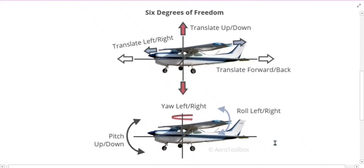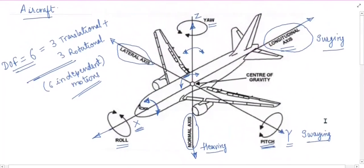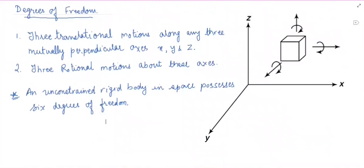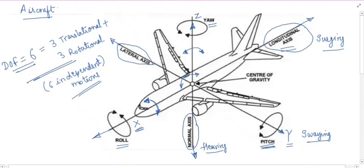These are the six independent motions that an aircraft or any free body in space can have. This is about the degrees of freedom of an unconstrained rigid body in space. Degrees of freedom is defined as the number of independent motions that a body can possess. This is all for today. Thank you very much.